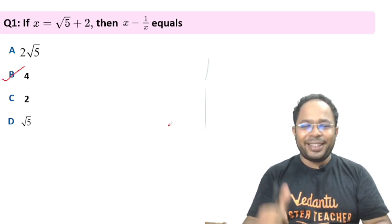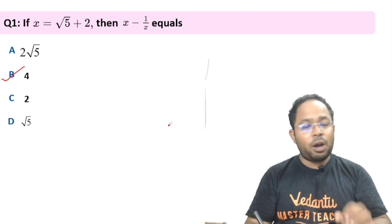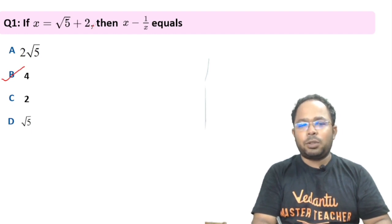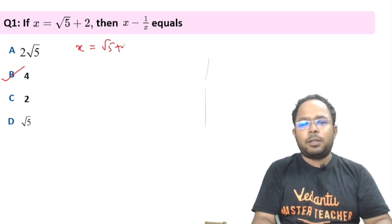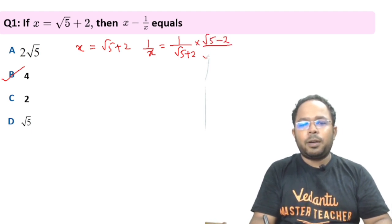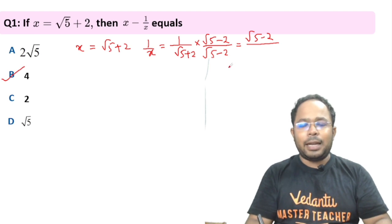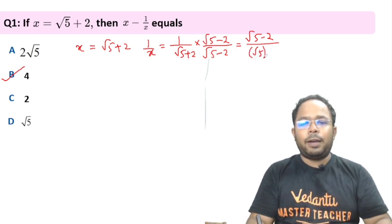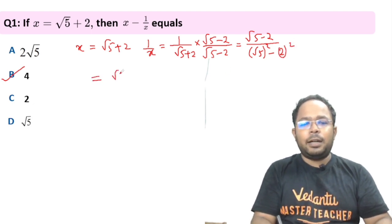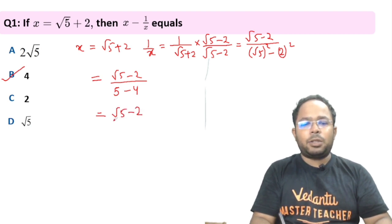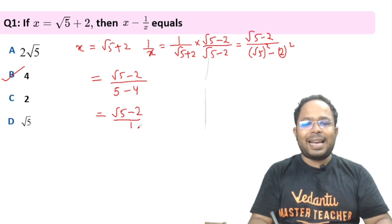If your answer is B, super pentabulous amazing! Let's see the solution. x is given as √5 + 2. We need 1/x, which is 1/(√5 + 2). We rationalize by multiplying with (√5 − 2)/(√5 − 2). Using the identity (a+b)(a−b) = a²−b², the denominator becomes (√5)² − 2² = 5 − 4 = 1. So 1/x equals √5 − 2.